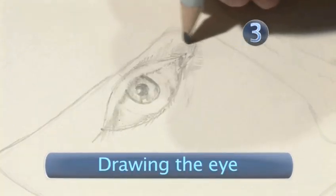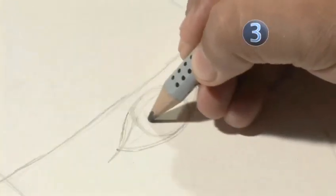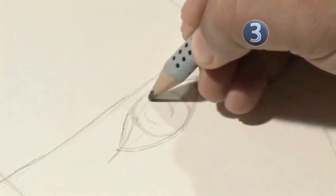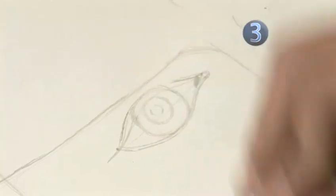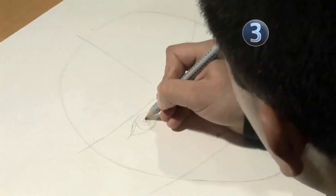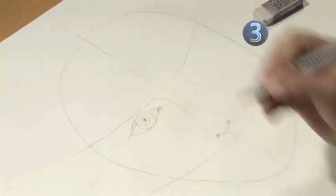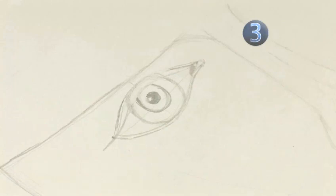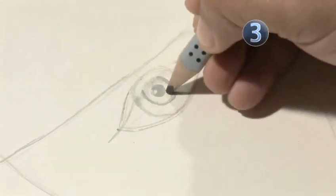Step 3: Drawing the eye. Within your guide circle, draw concentric circles to represent the iris and pupil. In this case, the top of the iris is cut off by the top eyelid. Shade the pupil very dark, leaving a small white square to represent the reflection of light. Then shade the iris in as well.